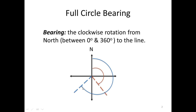Likewise, the blue line — it is the angle from north to that blue line. If we wanted to find the angle between the red and blue line, we would just have to subtract the bearing of the red line from the bearing of the blue line. We will use that in a more complex problem, and it will be explained again.